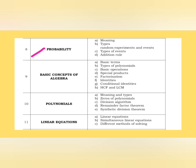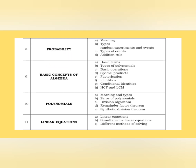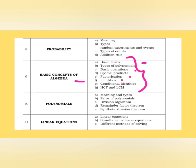Next, probability: meaning, types, random experiments and events, types of events, additional rule — video already made. Moving to basic concepts of algebra: basic terms, types of polynomials, basic operations, special products, factorization, identities — always expect questions from identities — conditional identities, HCF and LCM.